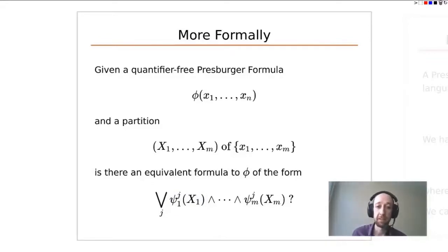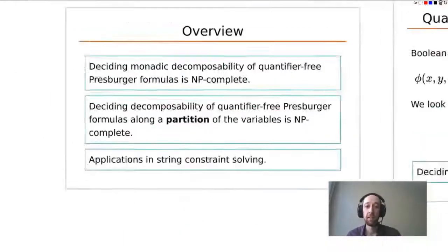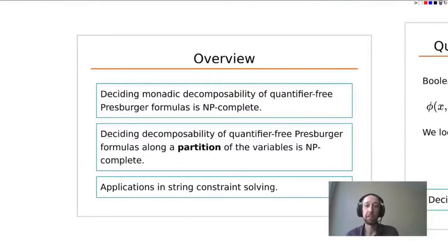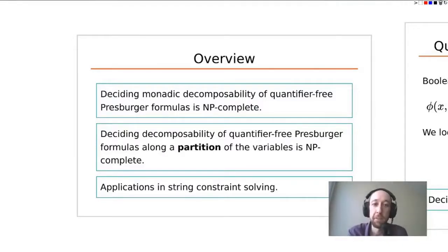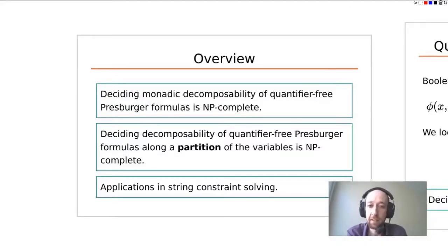Now we can revisit the results. If we're given a formula and want to know if monadic decomposition is possible, that's an NP-complete problem. Similarly, if we're given a formula and a partition and want to decide whether decomposition along that partition is possible, that's also NP-complete.